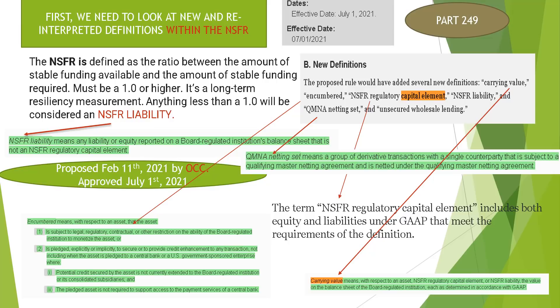Before we can look at the NSFR itself, we need to look at some new definitions that fall within the NSFR definition. This is effective July 1st. The proposed rule would have added several definitions. The first is carrying value, which means, with respect to an asset, the NSFR regulatory capital element or NSFR liability — the value on the balance sheet of the board institution as determined in accordance with GAAP.